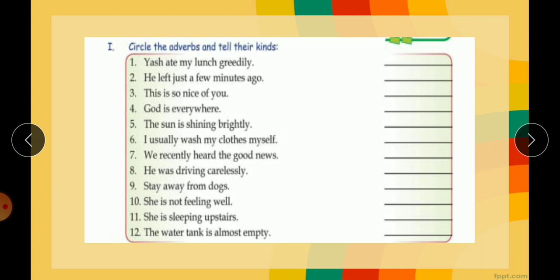So what are you supposed to do? There are 12 sentences. You have to read all these sentences one by one and then you have to find the adverb. You will underline or circle the adverb and over here you will be writing their kinds. There are five kinds: adverb of manner, adverb of place, adverb of time, frequency, and adverb of degree. Out of these, that particular word belongs to which category you have to write here.